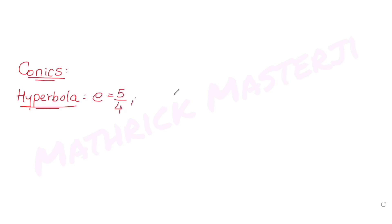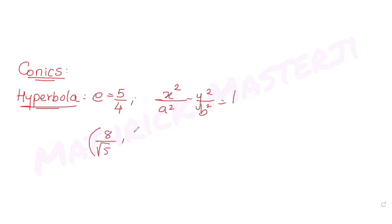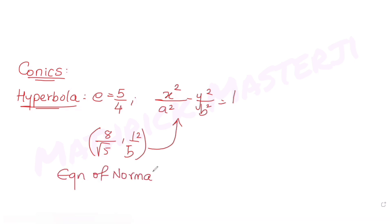The question says: let the eccentricity e = 5/4 for the hyperbola x²/a² - y²/b² = 1. The equation of the normal at the point (8/√5, 12/5) on the hyperbola is given as 8√5·x + βy = λ. We need to find the value of λ - β.